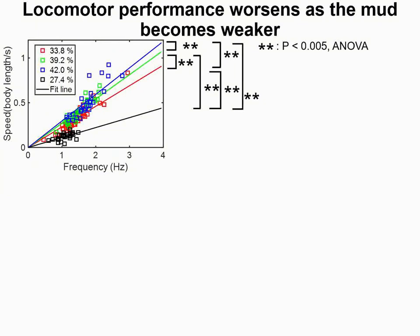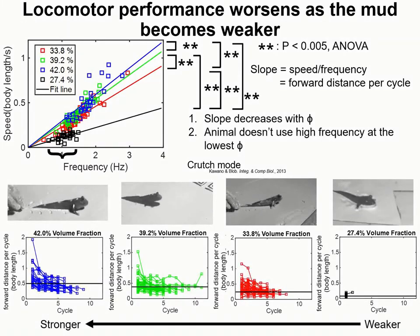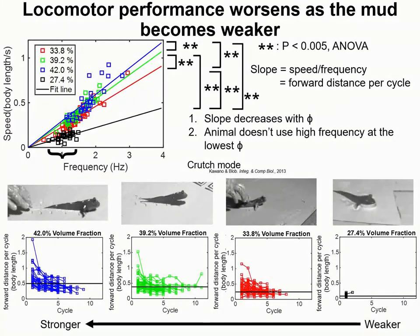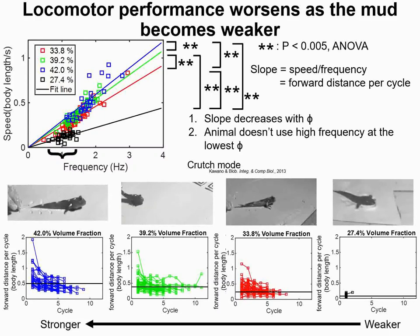In most trials, the mudskipper uses the normal crutching gait. We found that the crutch walk mode speed decreases with volume fraction, which can be seen by the slope that decreases with volume fraction. The animal does not use high frequency at the lowest volume fraction. Speed was also found to decrease over each cycle as the animal progresses forward. The forward distance per cycle also reduces as the mud gets weaker, and it also decreases with increasing cycles.